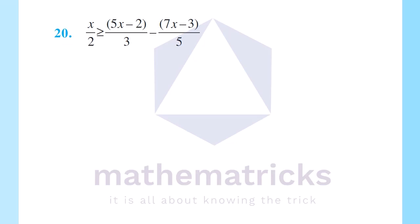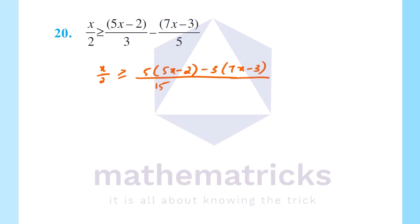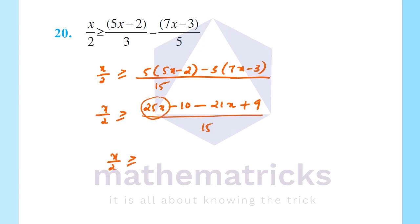Next question: x by 2 greater than or equal to (5x minus 2) by 3 minus (7x minus 3) divided by 5. The LCM of 3 and 5 is 15. Cross multiplying the right side: 5 into (5x minus 2) minus 3 into (7x minus 3). Expanding: 25x minus 10 minus 21x plus 9. Simplifying: 25x minus 21x is 4x.